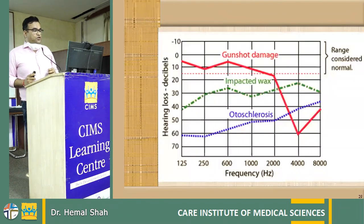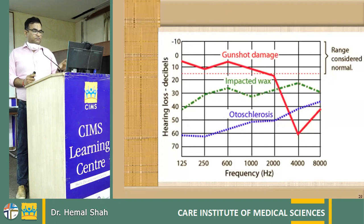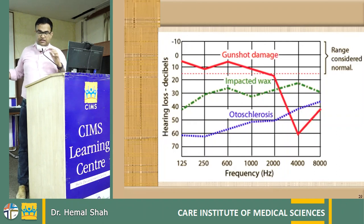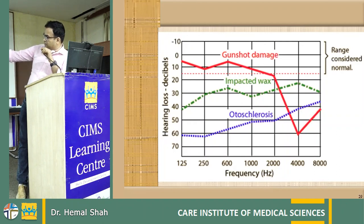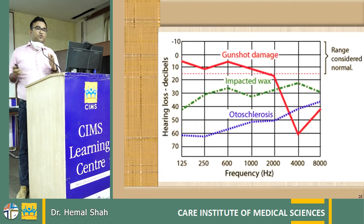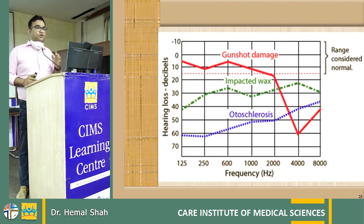Gunshot damage is also noted. In full-blown otosclerosis, the hearing loss can sometimes show a reverse slope as well, though thresholds are generally very sensitive — these are rough guidelines for interpreting conductive, sensorineural, and mixed types of hearing loss.